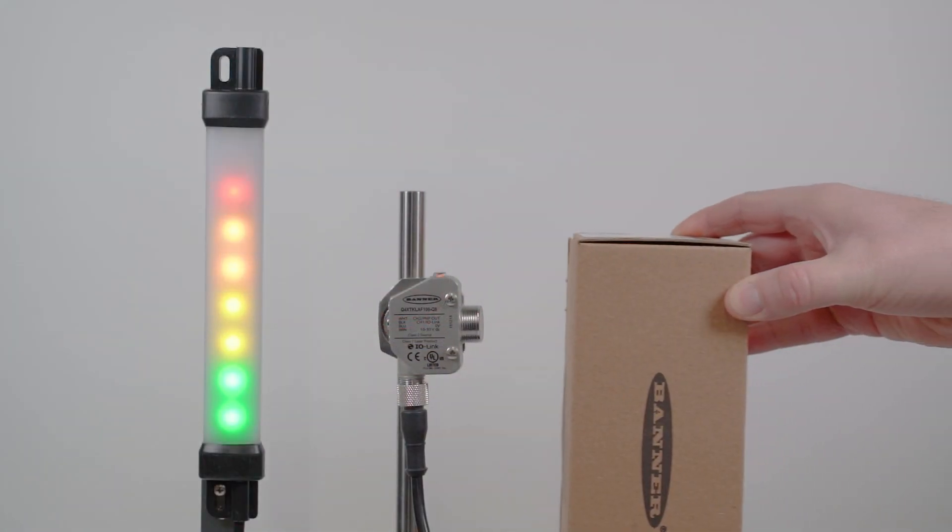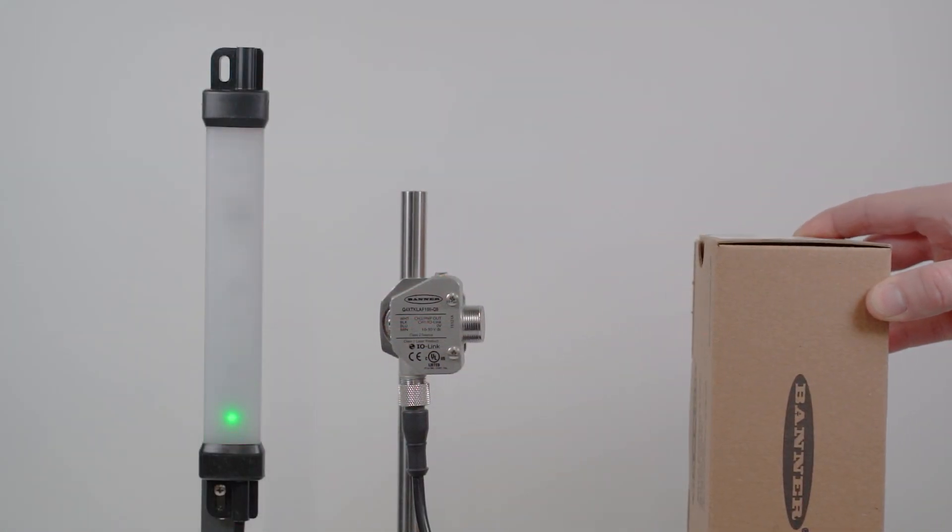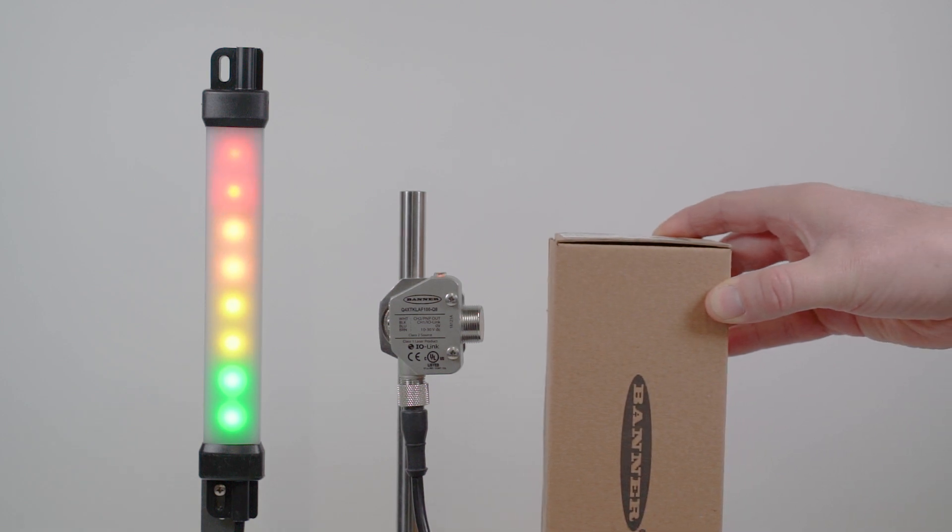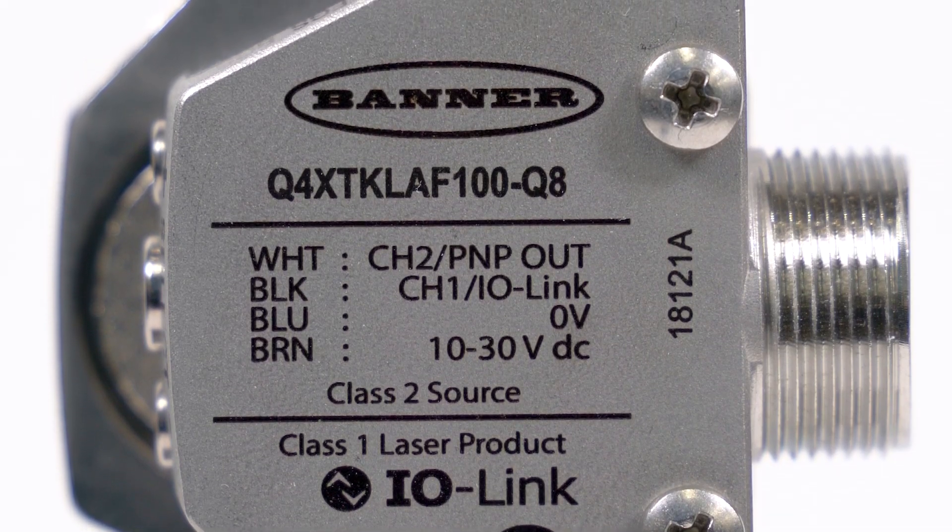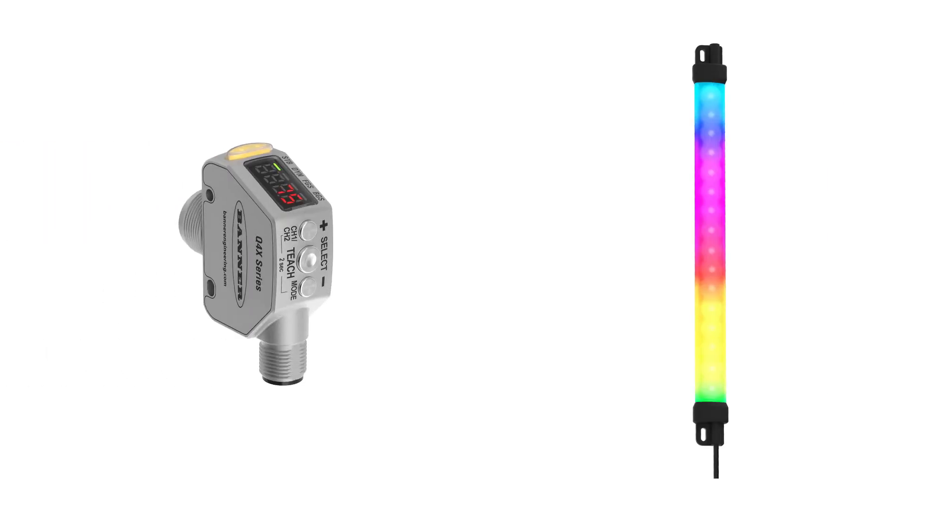In this example, we will be using a WLS-15 Pro strip light and a Q4X laser measurement sensor with a pulse frequency modulated output to show how to physically connect your PFM or PWM output device to a Pulse Pro enabled light.